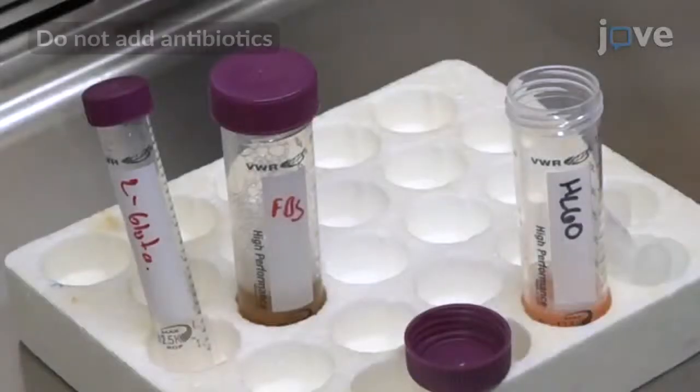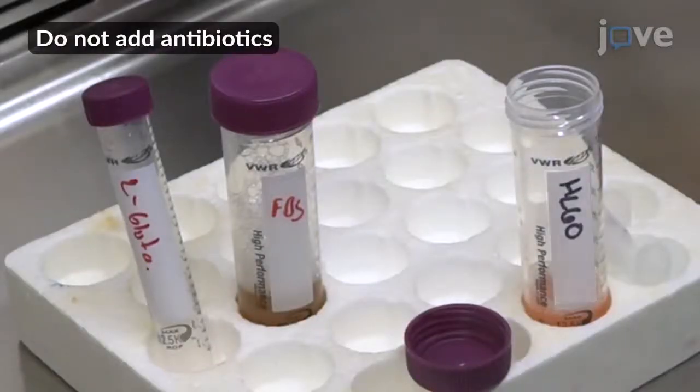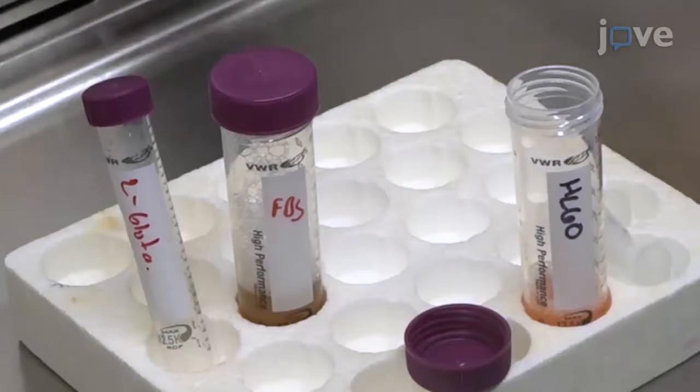To begin, prepare HL-60 cell culture media composed of 500 mL RPMI supplemented with L-glutamine and 50 mL heat-inactivated fetal bovine serum.